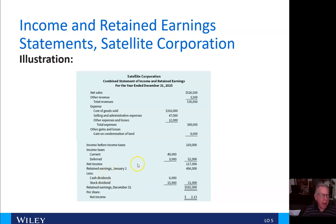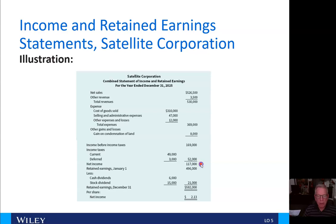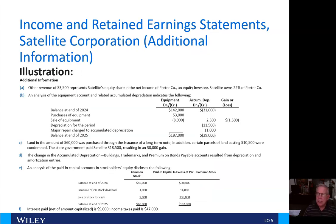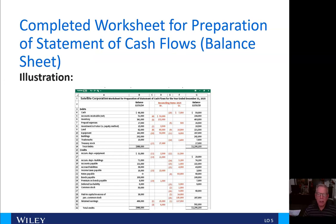Hi everybody, and welcome back to video number nine in Chapter 22. When we left off, we had just looked at the income statement and statement of retained earnings from the Satellite Corporation. We found the $117,000 in net income and how that rolled into retained earnings at $592,000. Then we reviewed the illustration with the additional information. Now we're going to see how we include all this information in a fairly elaborate spreadsheet.